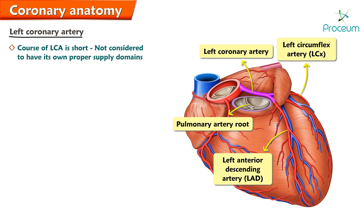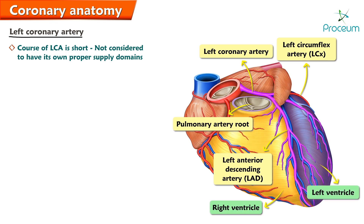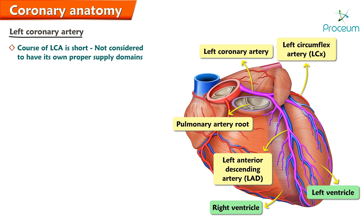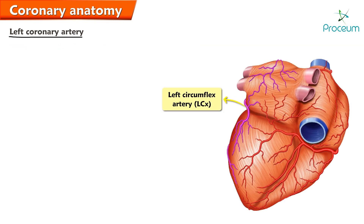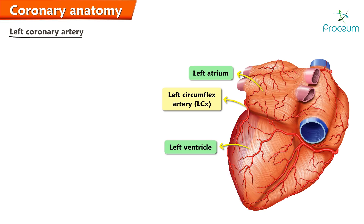The left anterior descending artery descends between the right and left ventricle to supply the anterior interventricular septum, the more left aspects of the right ventricle, and the majority of the left ventricle. The left circumflex artery courses posteriorly between the left atrium and the left ventricle to supply the more posterior aspects of the left ventricle.